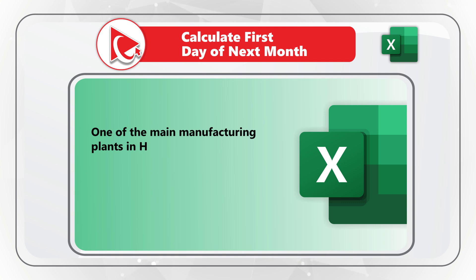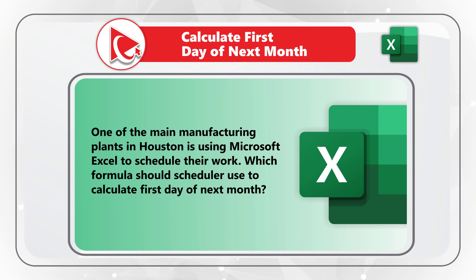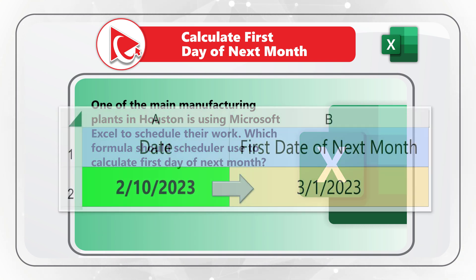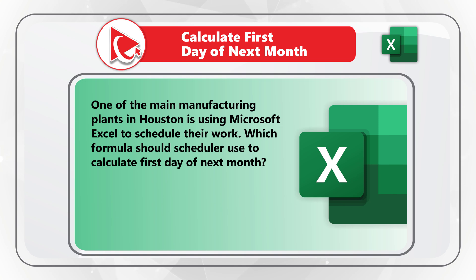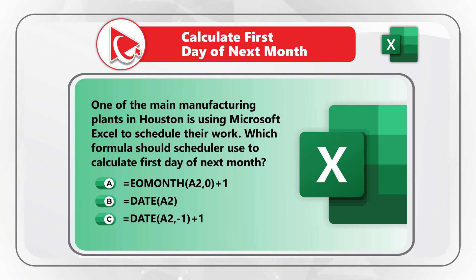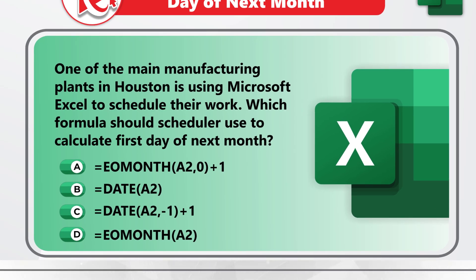Here's a very interesting Excel test question: how to calculate the first day of the next month. A manufacturing plant in Houston uses Excel to schedule their work. The scheduler needs to calculate the first day of next month given today's date of February 10, 2023. Four formula choices: A, EOMONTH(A2,0)+1; B, DATE formula; C, DATE formula with different arguments; D, EOMONTH(A2) with no offset.